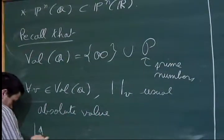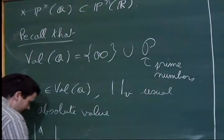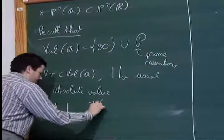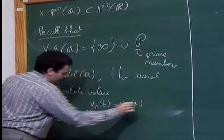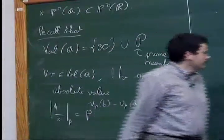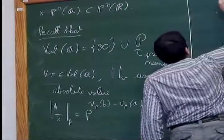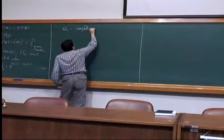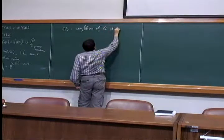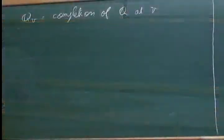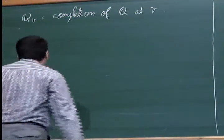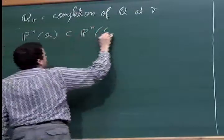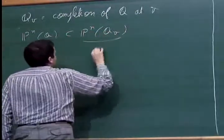In particular, |A/B|_p is equal to p to the power of the valuation at p of B minus the valuation at p of A. And Q_v is a completion of Q at V. Of course, we can consider P^n(Q) in P^n(Q_v), and this is a topological space.